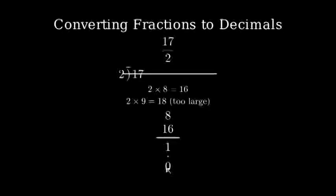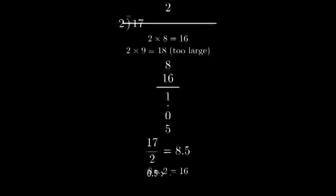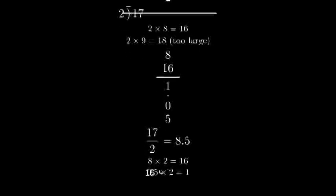To verify our answer, we can multiply 8.5 times 2. 8 times 2 is 16, and 5 tenths times 2 is 1. 16 plus 1 equals 17, confirming our answer is correct.